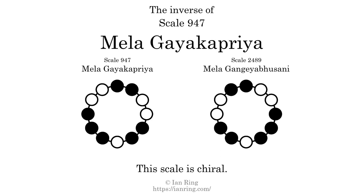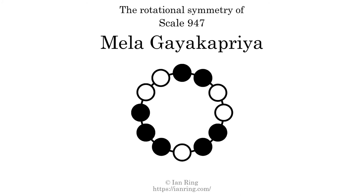The inverse of a scale is a mirror image — it is what you get when the sequence of intervals is reversed. The inverse of this scale is Scale 2489, also known as Mila-Gangea-Bhuseni. This scale is chiral; it cannot transform into its inverse by rotational transformation. This scale has no rotational symmetry.